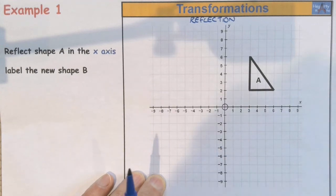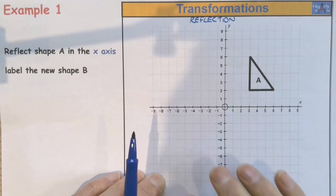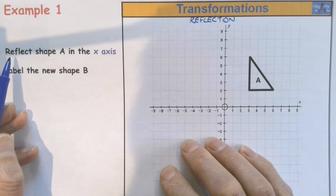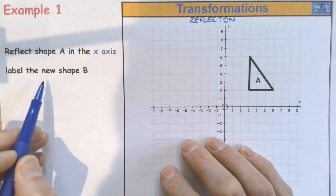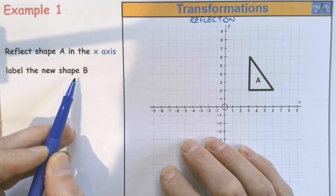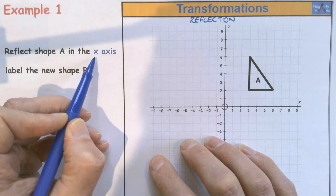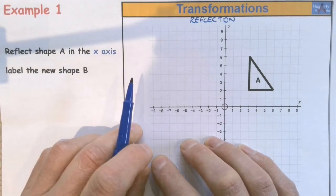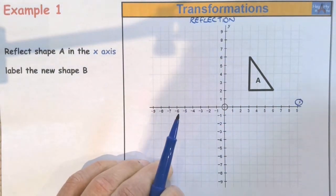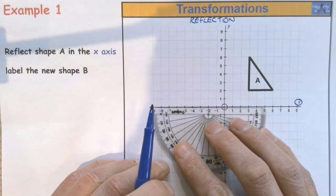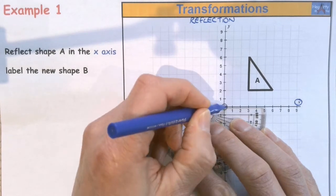Hi, it's Mr. Blatcher here. We're going to continue our transformations for reflection now. We're actually going to do some reflecting. So we're asked to reflect shape A in the x-axis and label the new shape B. So the x-axis is right there. I want to actually be on the x-axis, so that's pretty straightforward. I draw my line of reflection on the x-axis.